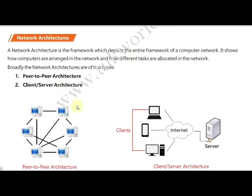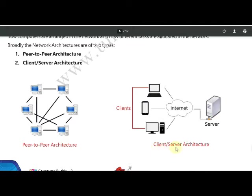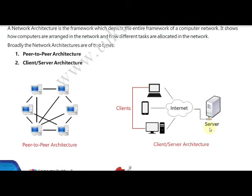There are two types of network architecture. The first one is peer-to-peer network architecture, and the second one is client-server network architecture. In peer-to-peer architecture, peers — meaning normal machines or clients — are connected to each other. In client-server architecture, clients are connected to a server, which is a highly configured machine. Clients can be your mobile, personal computer, or laptop, and the server is the host that provides services to other computers.